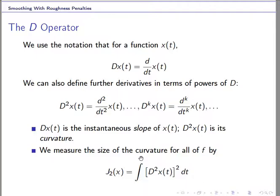Here D denotes the differential operator. We define the roughness of a curve by the integrated square of the second derivative of the curve. When this penalty equals zero, it corresponds to x(t) being either a constant or a linear function of t — in that case the second derivative equals zero. This is the definition of the penalty term.